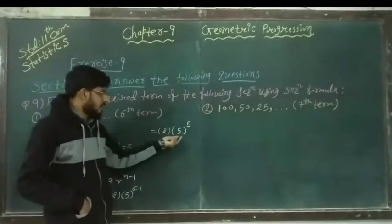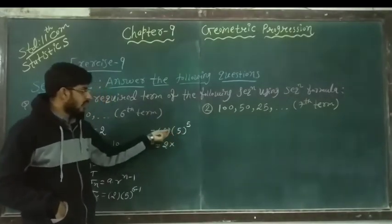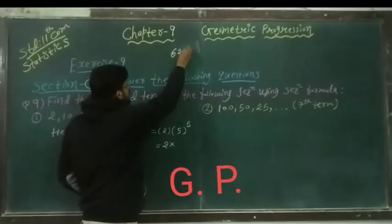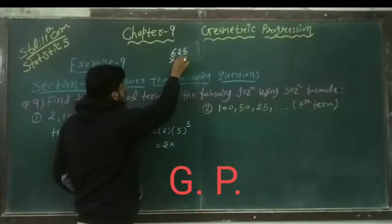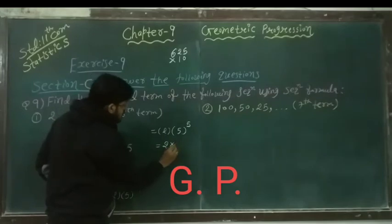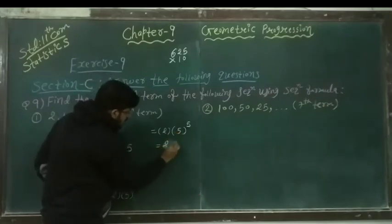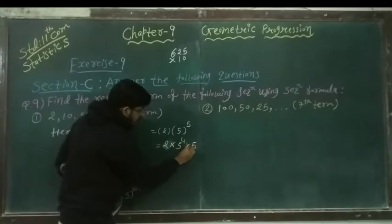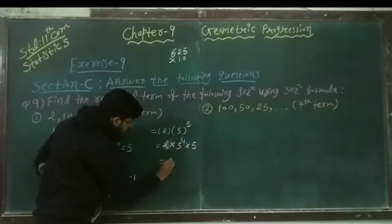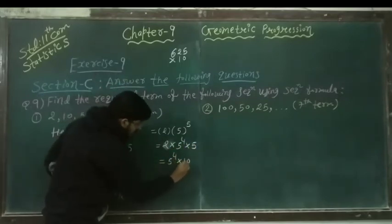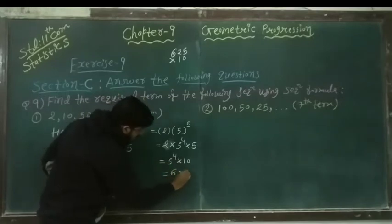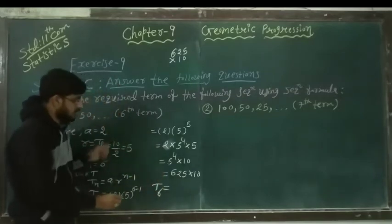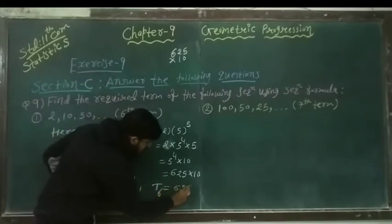What is the value of 5 raised to 5? We know 5 raised to 4 is 625. So the answer is 2 into 5 raised to 4 into 5. We can write 5 raised to 4 into 5, so 5 raised to 4 into 10 is equal to 625 into 10. So the sixth term of the given GP is 6250.